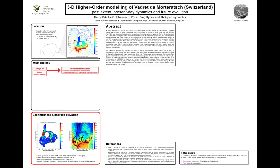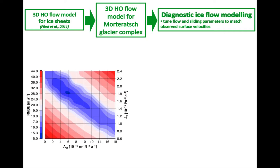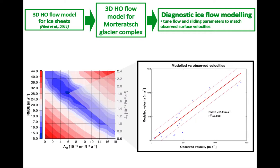In the second part, which is shown in green, we try to reproduce the observed surface velocities. This is done by launching an ensemble of 100 runs, each with a specific sliding parameter and rate factor, and we try to get as good a fit as possible between the observed and the modeled surface velocities.